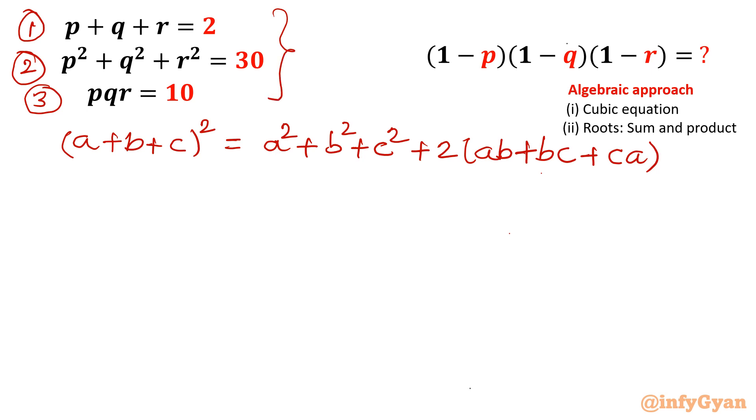Because pq plus qr plus rs is not known. If you observe the system of equations, then pq plus qr plus rs is not known. So I will find out that value first.